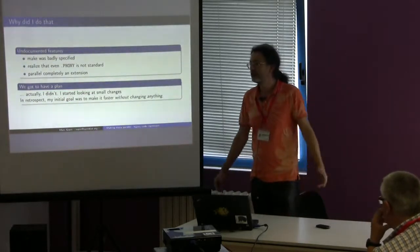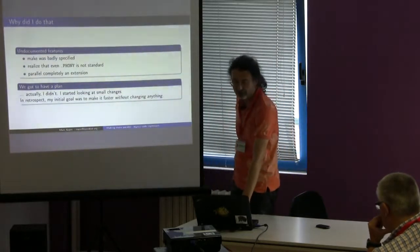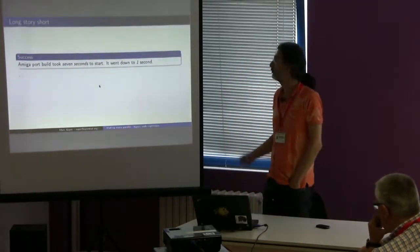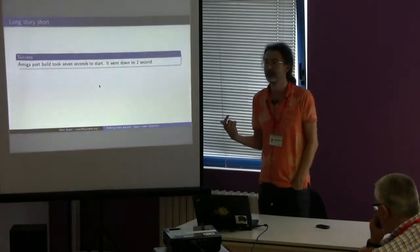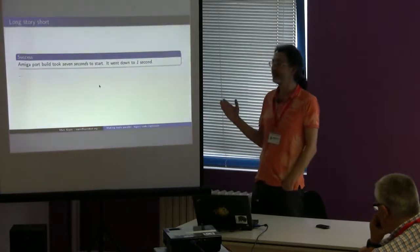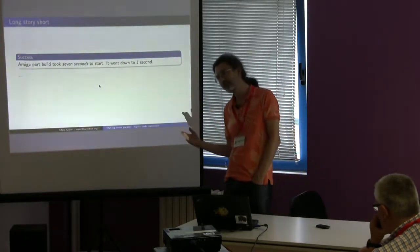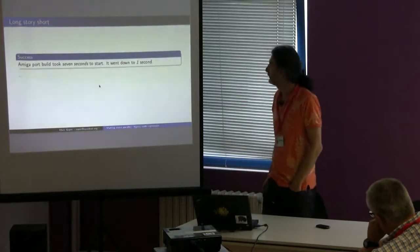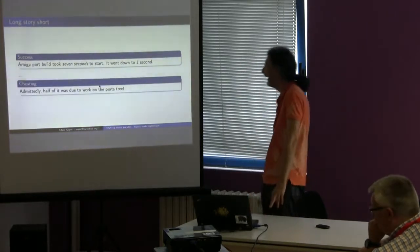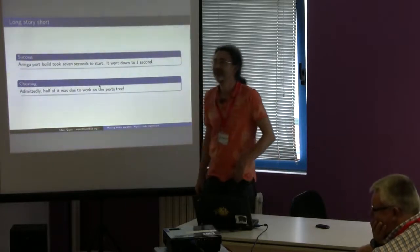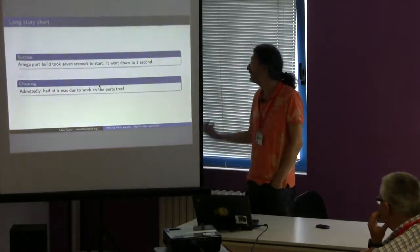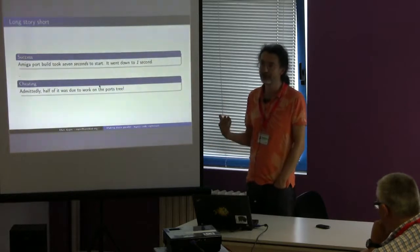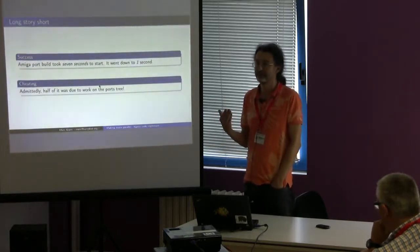I didn't have a plan. I started looking at some changes. My initial goal was just to make things faster. At the time I started, the Amiga port system just took seven seconds to start doing anything. You went to any port in the port tree, typed make, waited seven seconds, and then something happened — usually it crashed. It went down to one second. Now it's down to zero. Actually, the work I did on make is about halfway responsible for making things faster. The rest was changing the port tree so that it went thin, more or less.